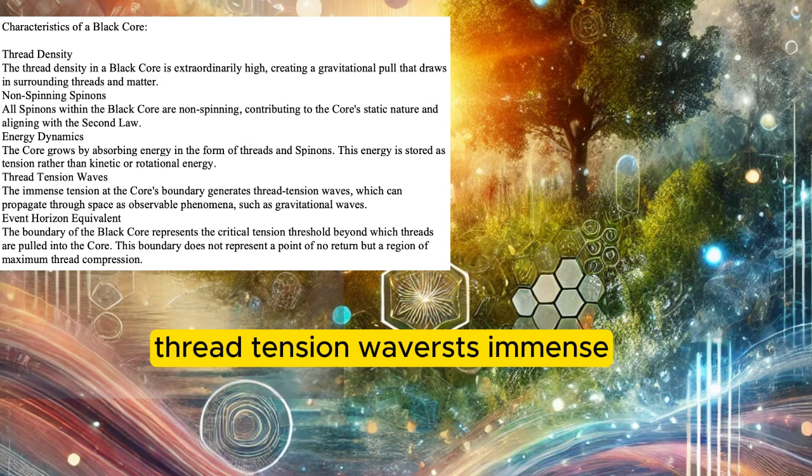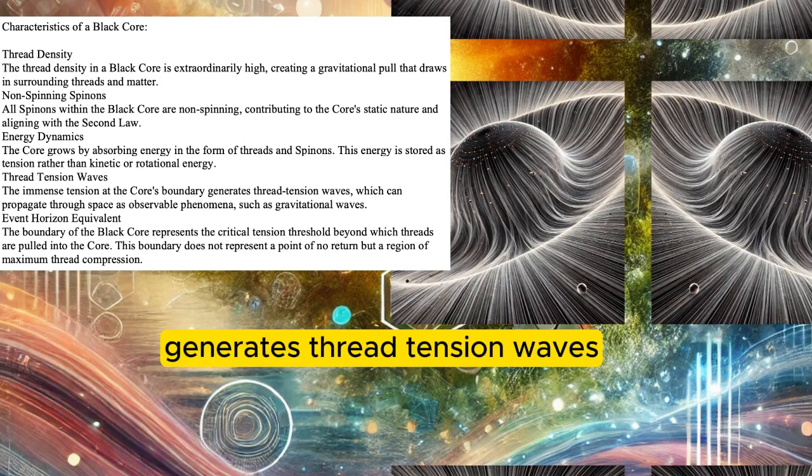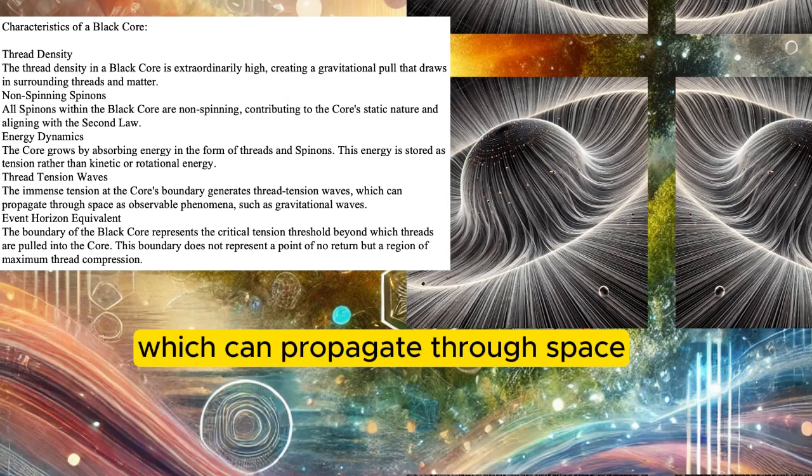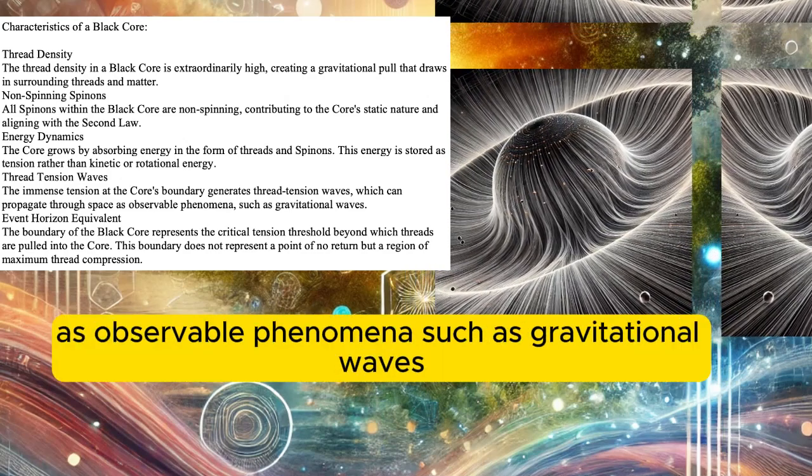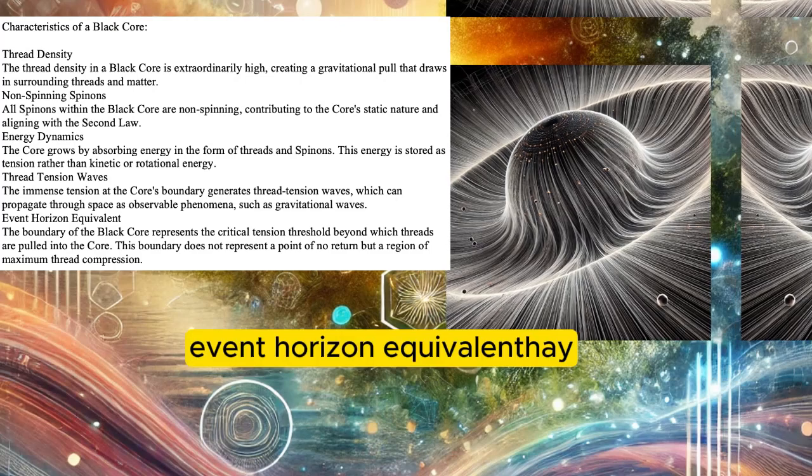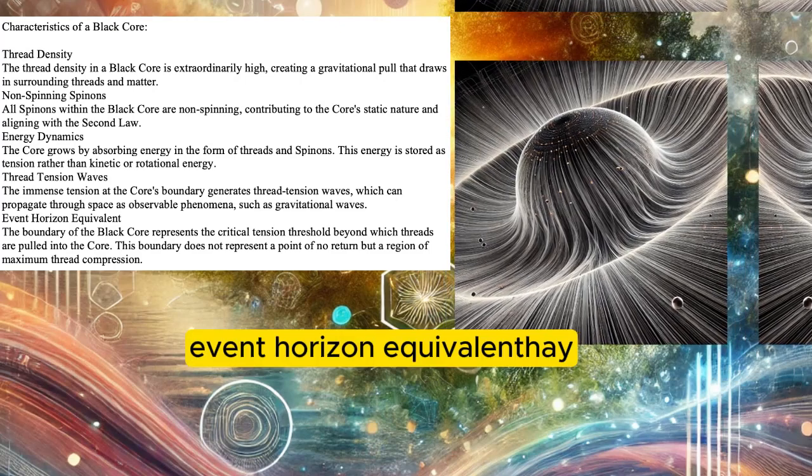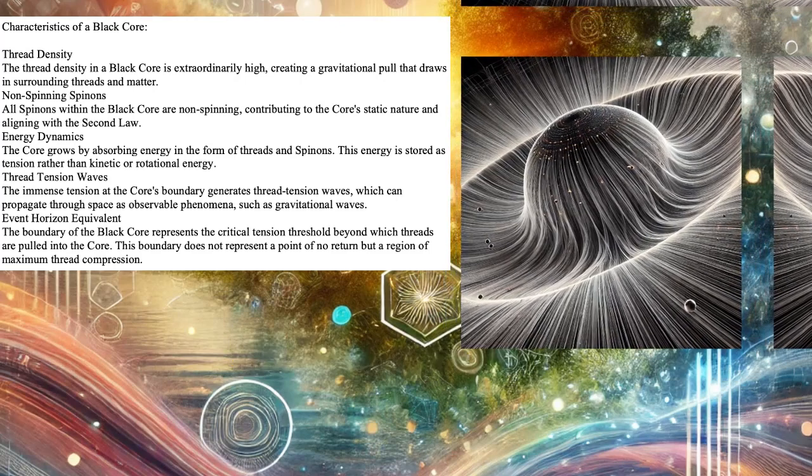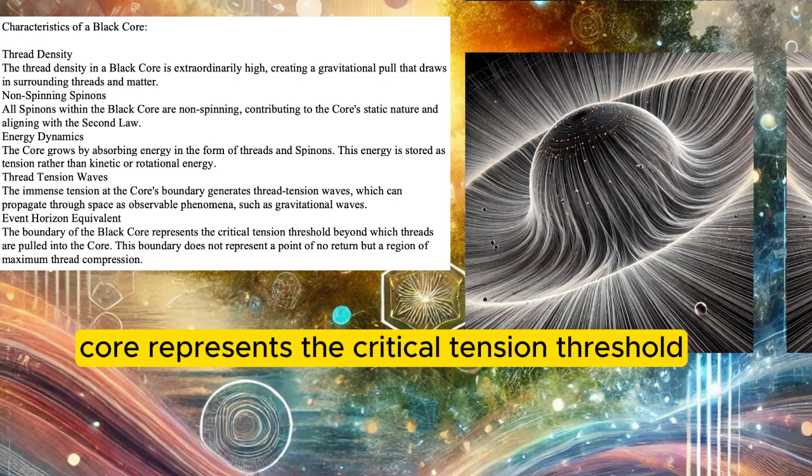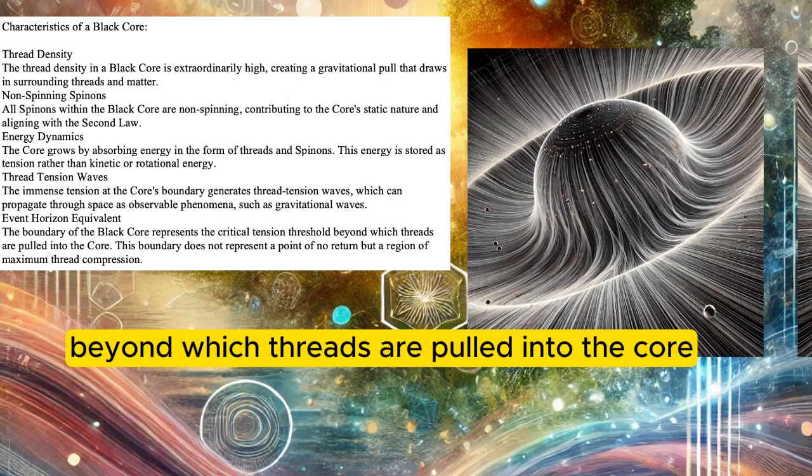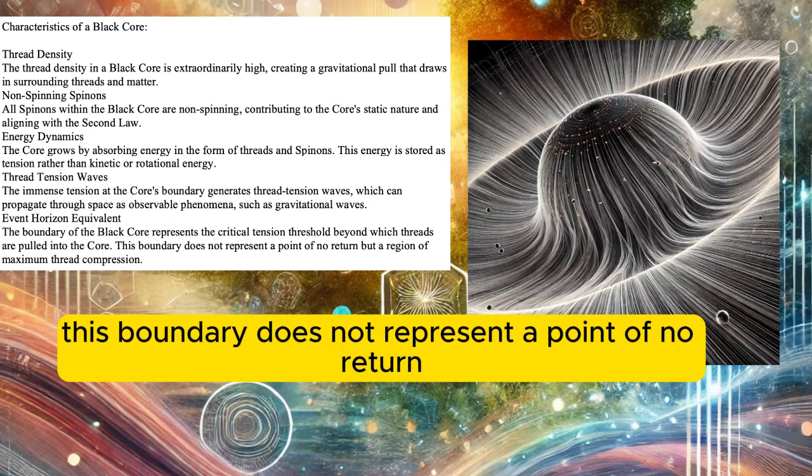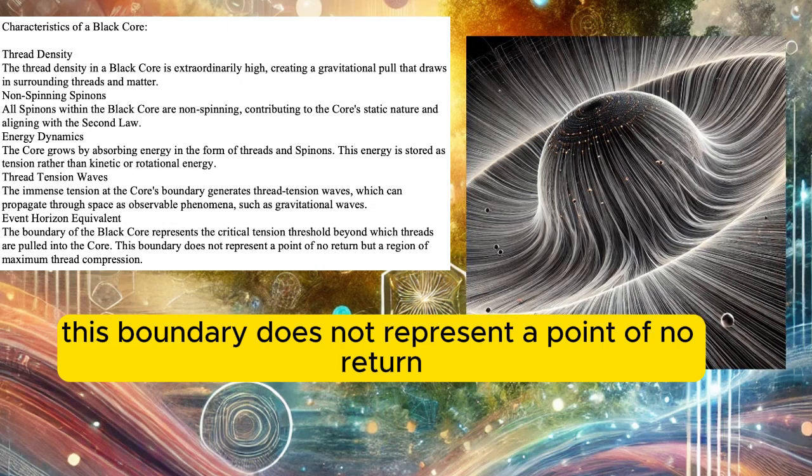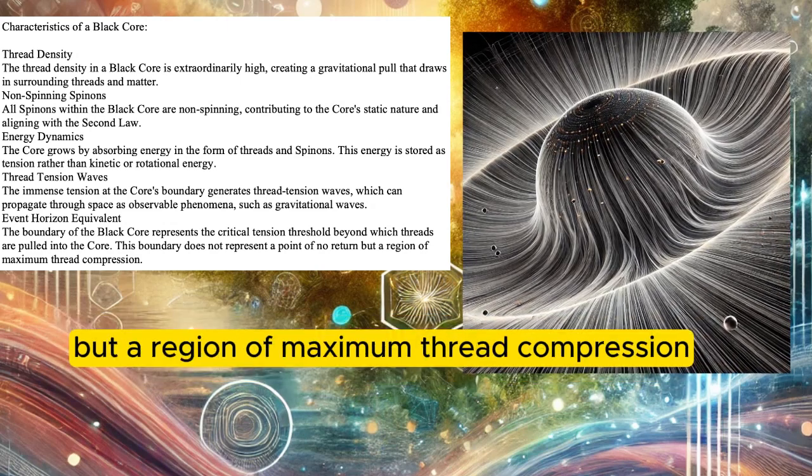Thread tension waves: immense tension at the core's boundary generates thread tension waves which can propagate through space as observable phenomena, such as gravitational waves. The boundary of the black core represents the critical tension threshold beyond which threads are pulled into the core. This boundary does not represent a point of no return but a region of maximum thread compression.